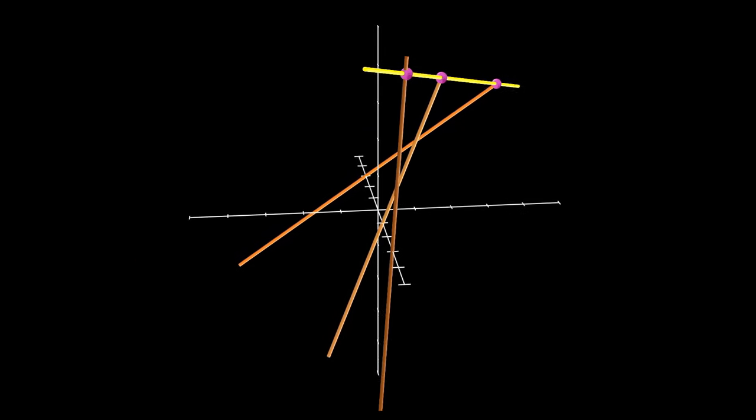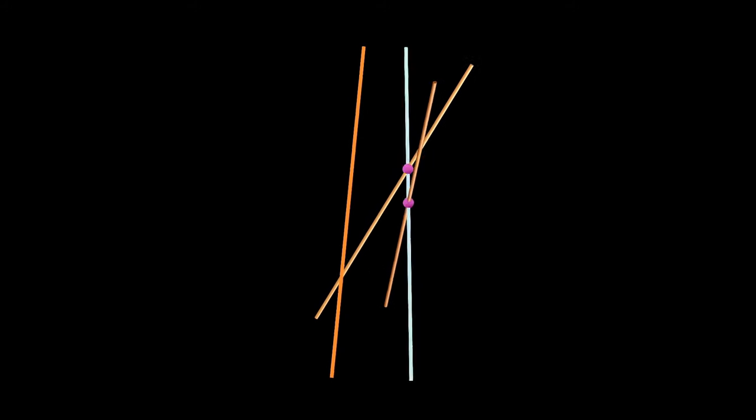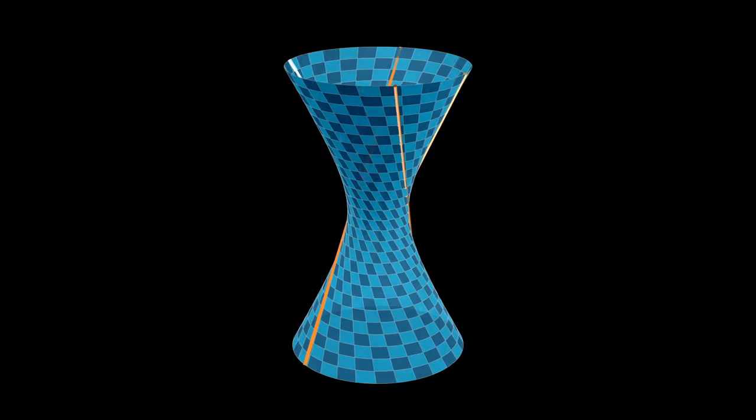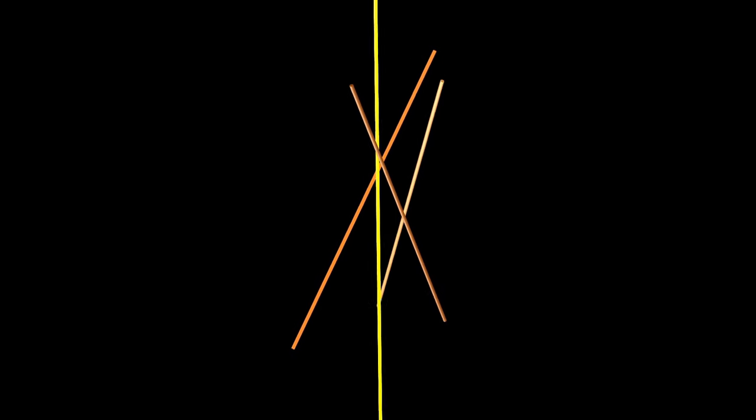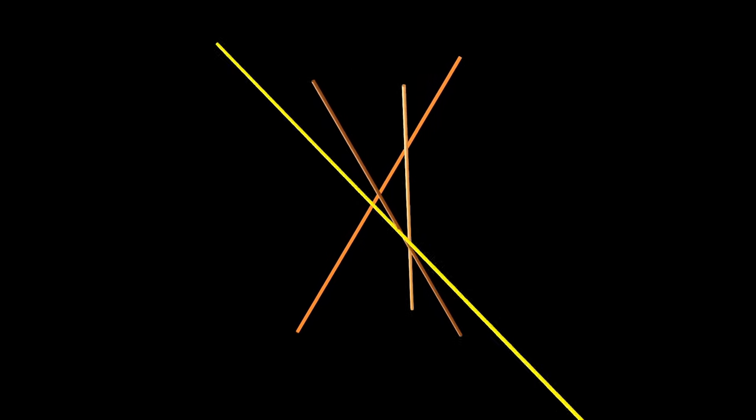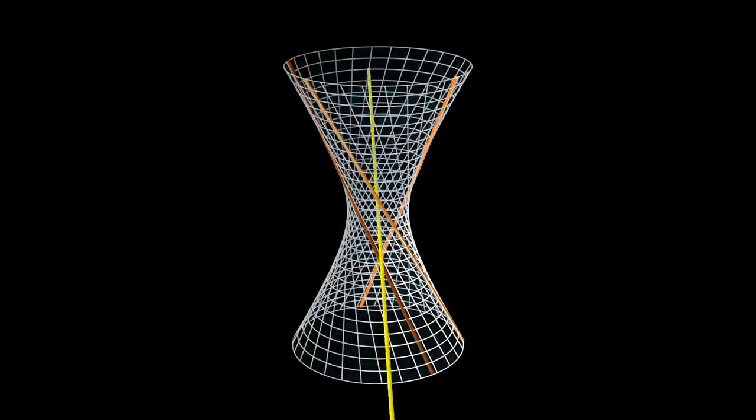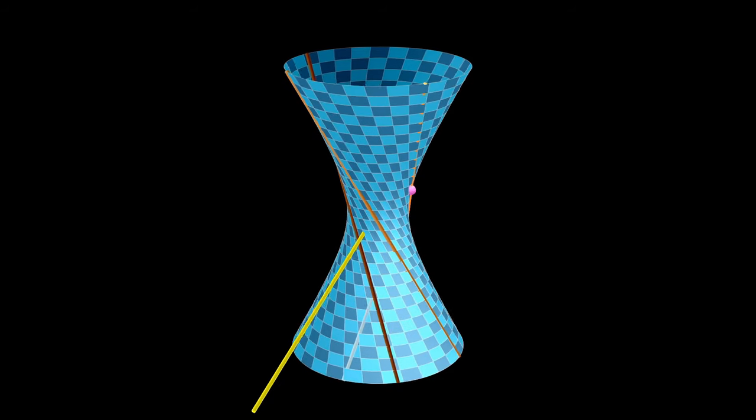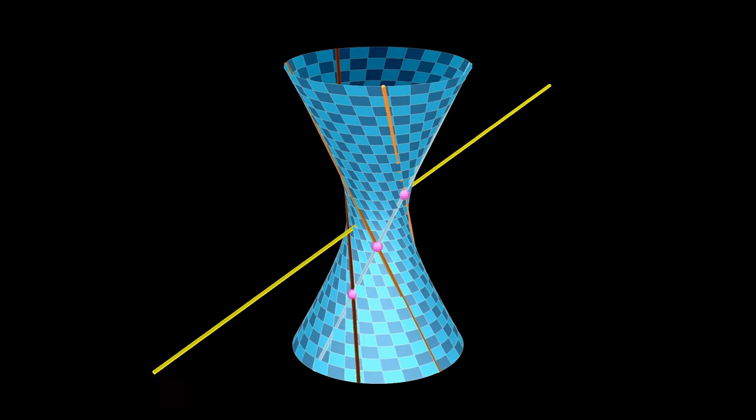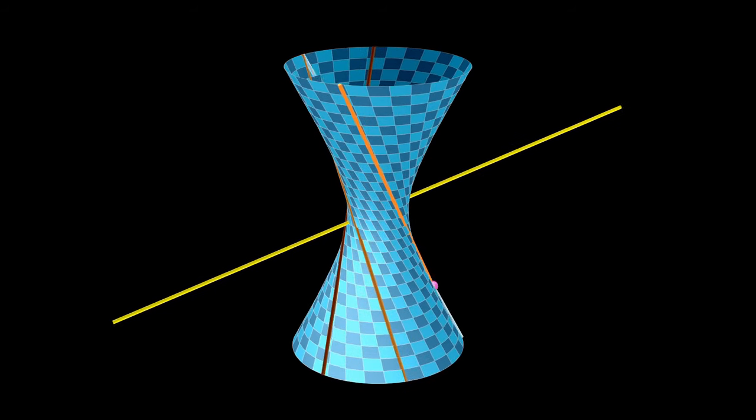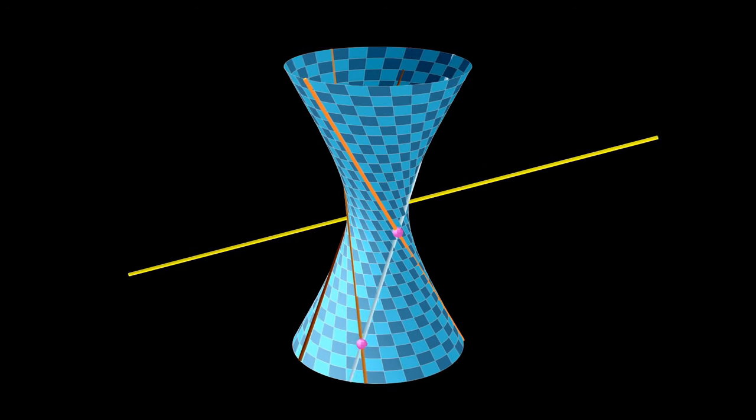Now that we know that there are infinitely many lines that intersect three given lines, the question of how many lines intersect four lines actually becomes much easier to tackle. Our first step is to take any three of the four given lines and create a hyperboloid from them. Recall that any line that intersects those three must also live on the hyperboloid on the opposite ruling.